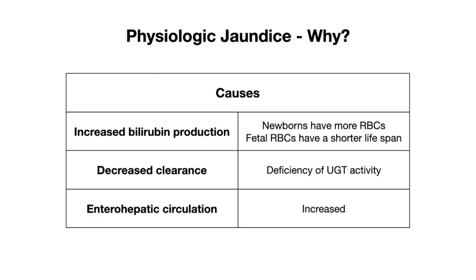The UGT enzyme is responsible for conjugation of bilirubin, which happens after hepatic uptake of unconjugated bilirubin and prior to biliary excretion of conjugated bilirubin. A third reason is increased enterohepatic circulation. The secreted conjugated bilirubin cannot normally be reabsorbed by intestinal epithelial cells; it is taken up by intestinal bacterial enzymes and converted into a form that can be excreted. However, at birth an infant's gut is sterile — they have far fewer bacteria — so very little conjugated bilirubin gets converted. Instead, it is converted back to unconjugated bilirubin by beta-glucuronidase in the intestinal mucosa, reabsorbed through the intestinal wall, and recycled into circulation. This process is known as the enterohepatic circulation of bilirubin.